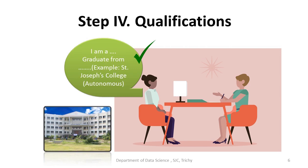Step number four: since you are a fresher, talk about your educational qualifications. Mention the degree you are currently pursuing, the educational institution, and then the CGPA. If your CGPA is not good, ignore mentioning it.